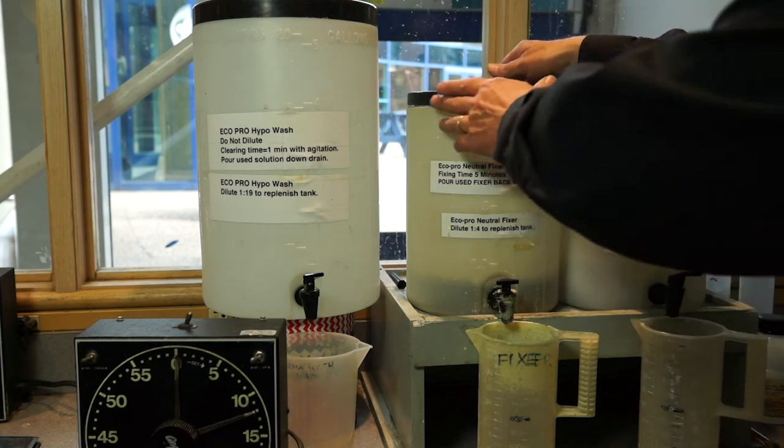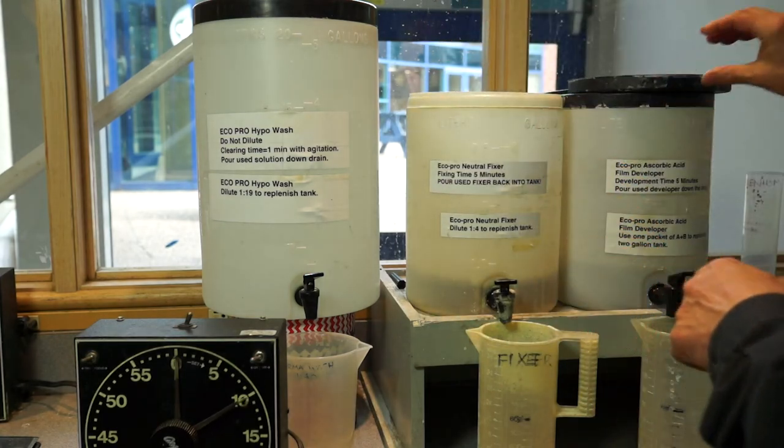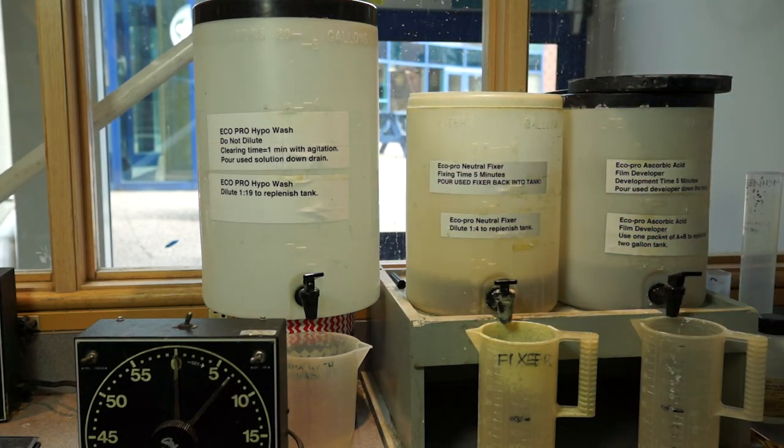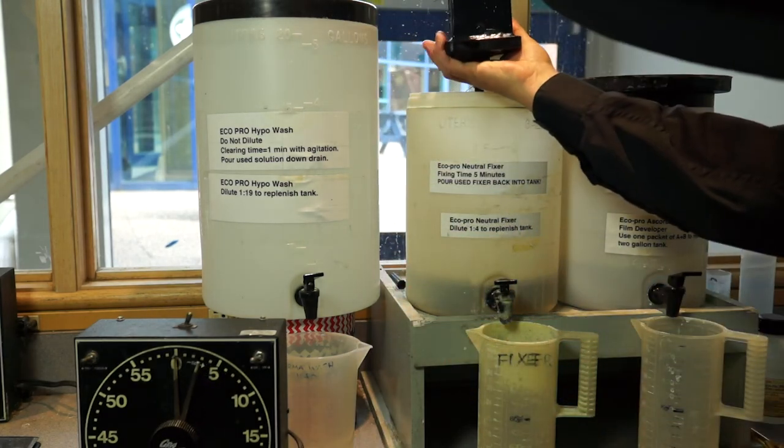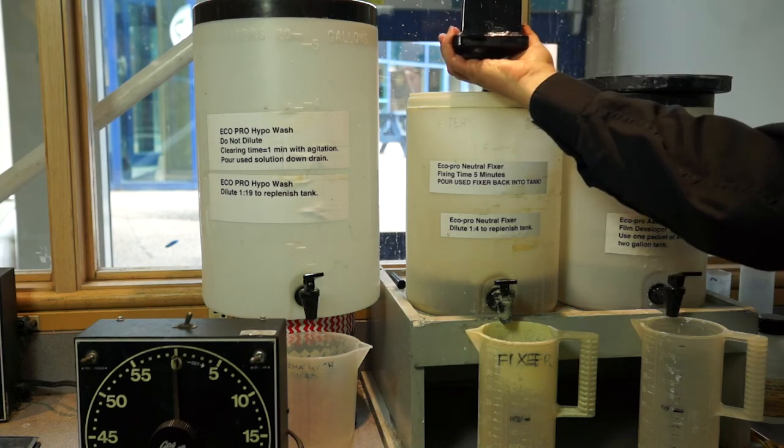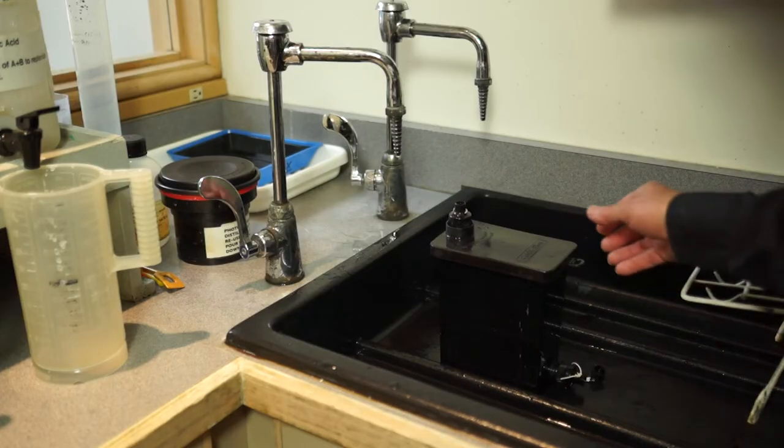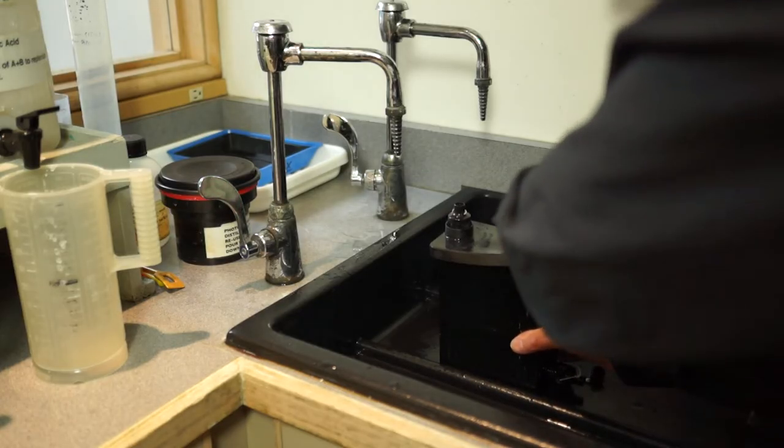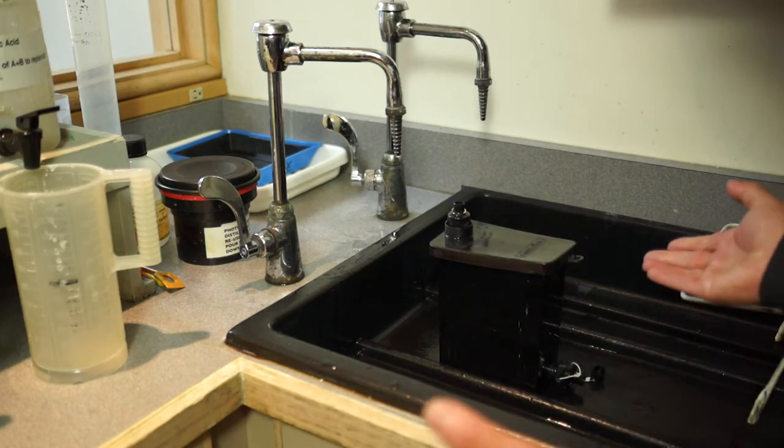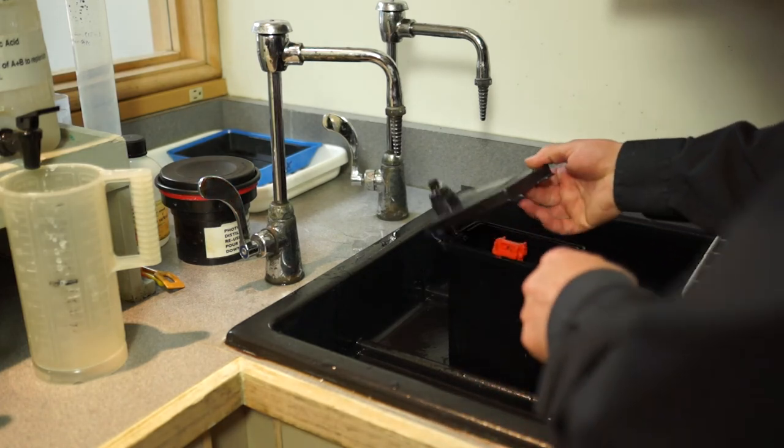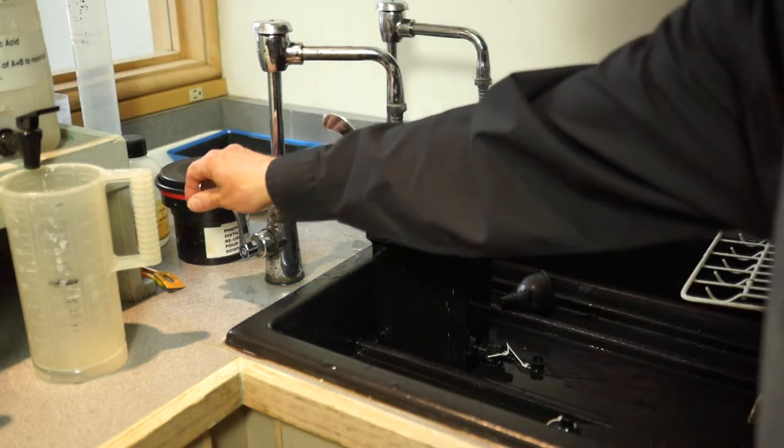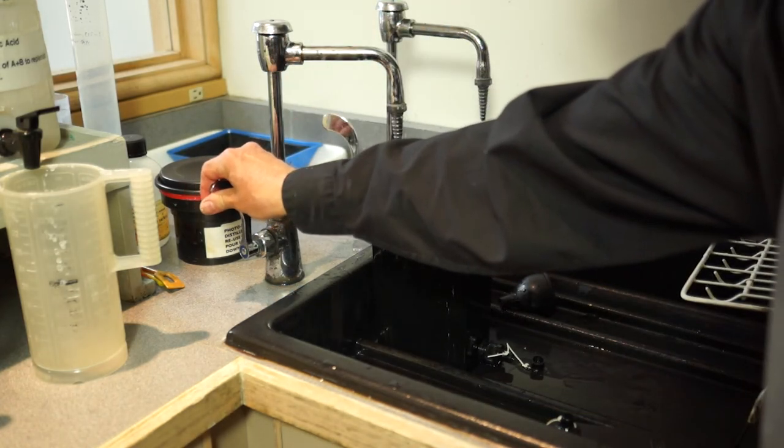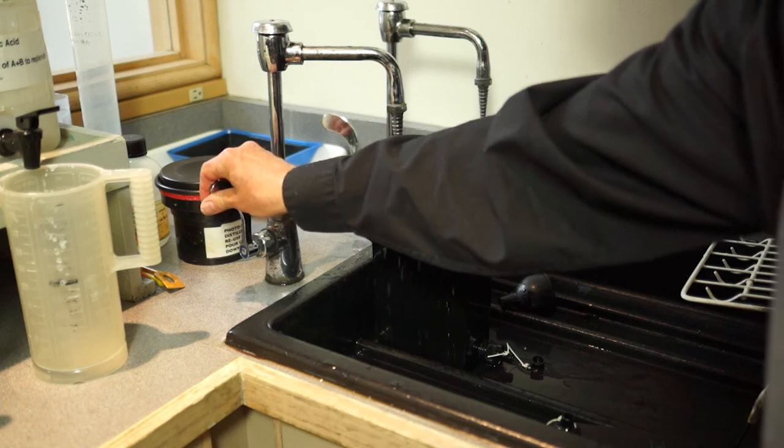Once the five minutes is up, you'll dump the fixer back into the bottle just like with roll film. Undo the top. After fixing, we're ready to rinse off the film. At this point the film is fixed - we can take the lid off and just put it underneath the water without making a mess.